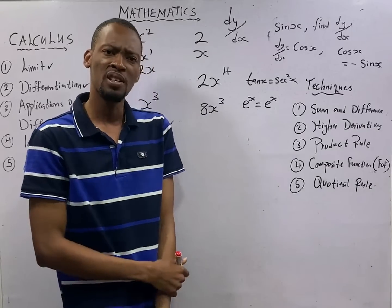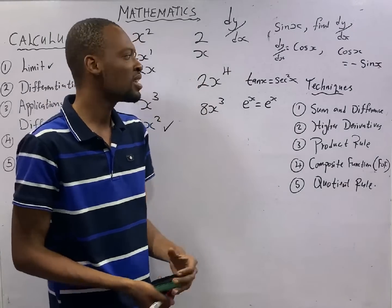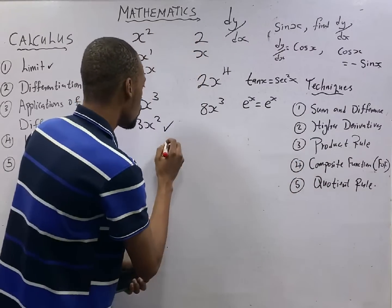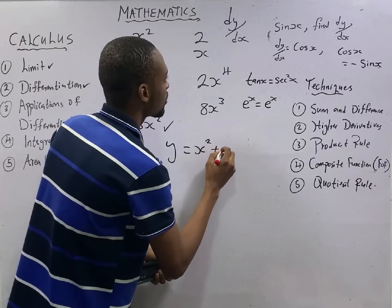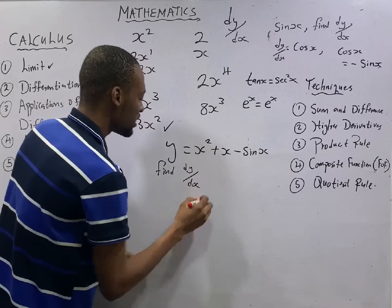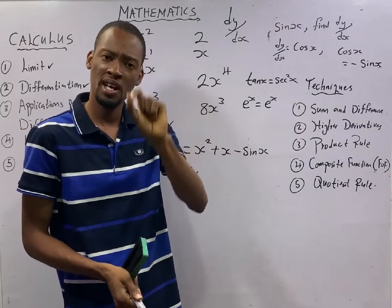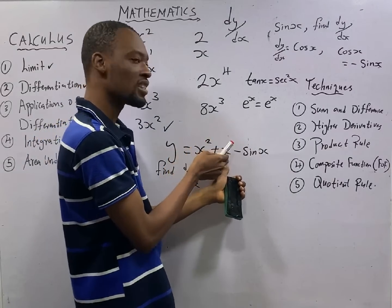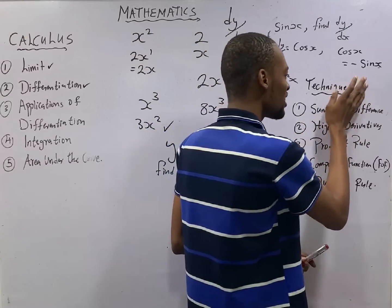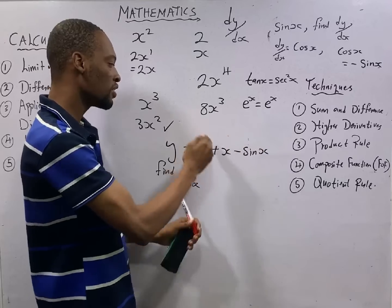The problem is JAM cannot simply say find the derivative of s squared — JAM requires application of these techniques. JAM can say: y equals s² plus s minus sin s, find dy/ds. In this case you are differentiating a sum and difference. The sum and difference technique states that once you have differentials separated by plus or minus, differentiate each of them individually.